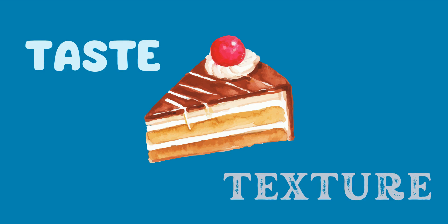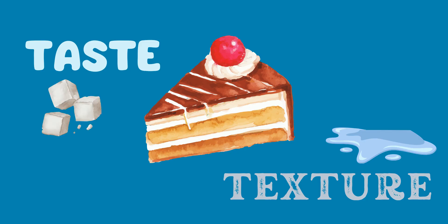Then we'll define our objective. How do we want the taste and texture to change? Let's say we want the cake to feel more moist than it was before, and we want it to taste sweeter, but not too sweet.